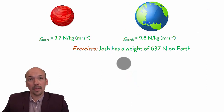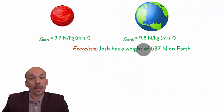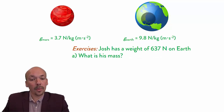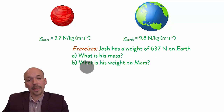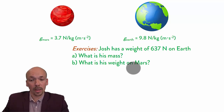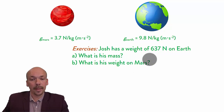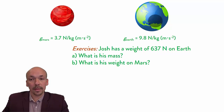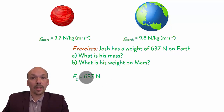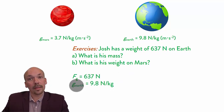Now an exercise — you can try it for yourself to see if you understand. We have Josh. He has a weight of 637 newtons on Earth. And the question is: what is his mass, and what is his weight on Mars? Try to calculate these to check that you understand the equation. First we are going to calculate his mass. We use the information from Earth because that's where we start. His gravitational force is 637 newtons, and the gravitational acceleration is 9.8.